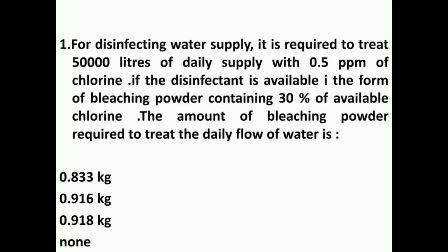First question: For disinfecting water supply, it is required to treat 50,000 liters of daily supply with 0.5 ppm of chlorine. If the disinfectant is available in the form of bleaching powder containing 30% of available chlorine, the amount of bleaching powder required to treat the daily flow is to be determined. Chlorine demand and residual chlorine are not given.